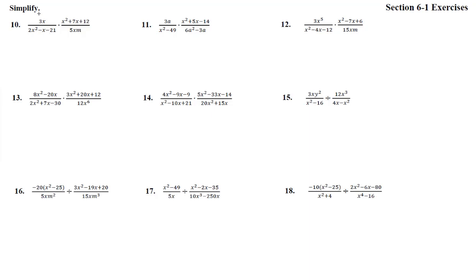So this first piece is 3 times x, which is just 3x — that's already factored. The second piece is a trinomial with leading coefficient 1, so it's (x)(x). We need two numbers that multiply to 12 and add to 7: that's 1 and 12, 2 and 6, or 3 and 4 — so plus 3 and plus 4.